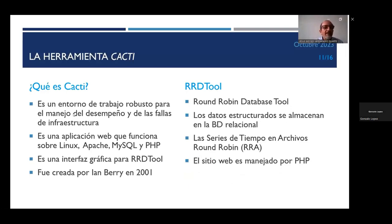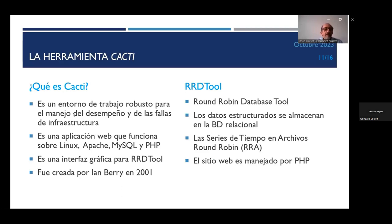Finalmente tenemos la herramienta CACTI. ¿Qué es CACTI? CACTI es un entorno de trabajo robusto para el manejo del desempeño y de las fallas de infraestructura. Es una aplicación web que funciona sobre Linux. Utiliza Apache como servidor web, MySQL como base de datos y PHP, que es el lenguaje de programación con el que podemos construir páginas web y scripts para obtener la información de CACTI. Es una interfaz gráfica para RRDTool y fue creada por Ian Berry en el 2001.